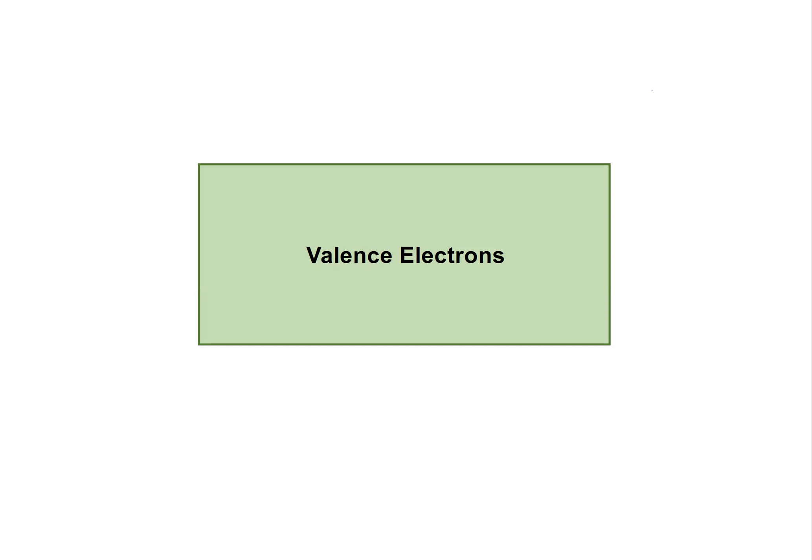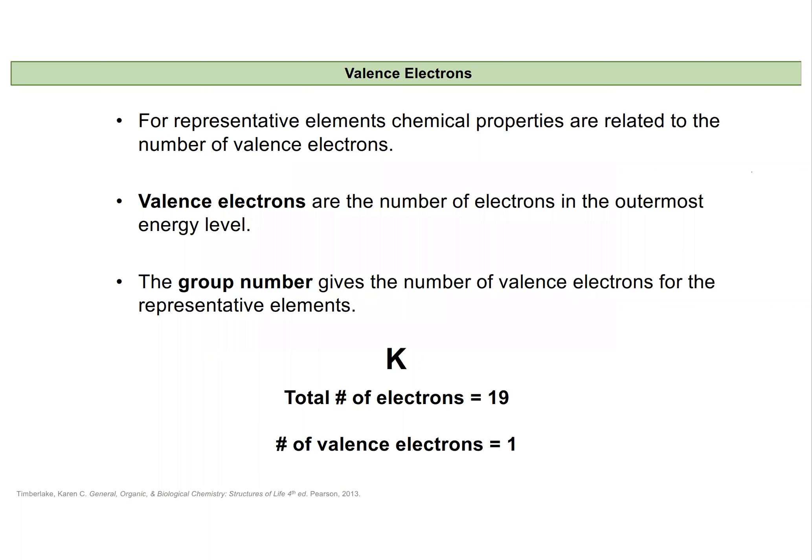In this video we'll review valence electrons in elements. For our representative elements that share the same chemical properties based on the group they're in, they're categorized in those columns and groups based on the number of valence electrons they have. The number of valence electrons is really dictating a lot of the properties of those elements.